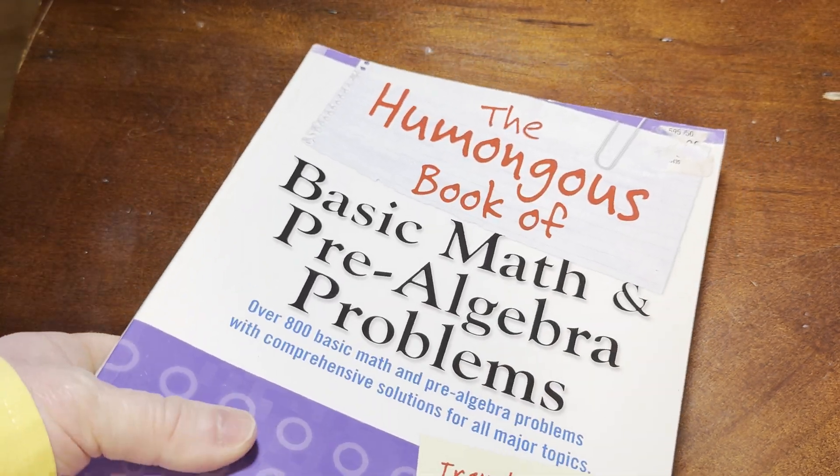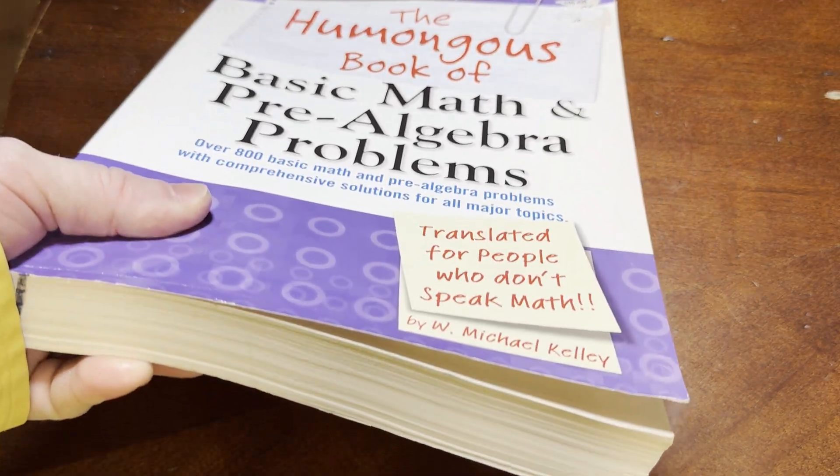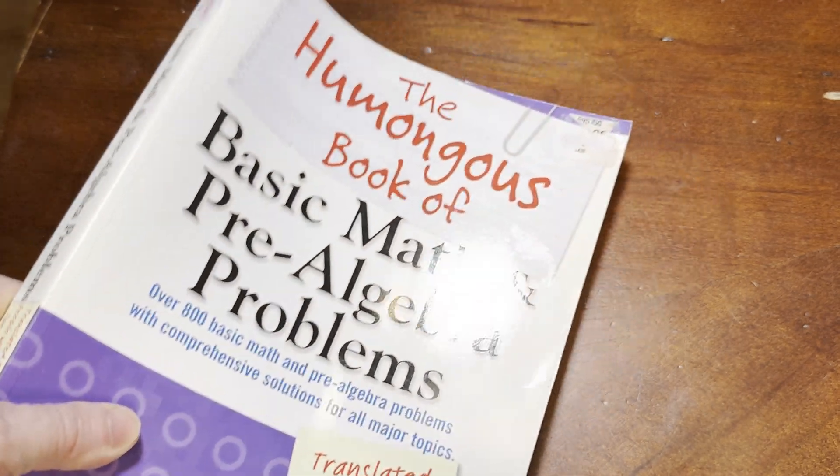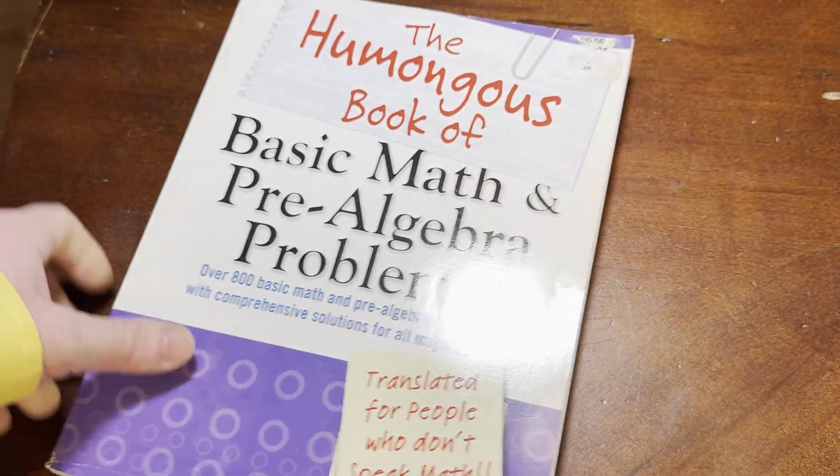It's called The Humongous Book of Basic Math and Pre-Algebra Problems, and in this video we're just going to take a really brief look at this book.